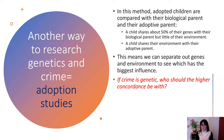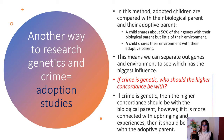This means we can separate out genes and environment to see which has the biggest influence on criminal behaviour. If crime is genetic, the higher concordance should be with the biological parent. However, if it is more connected with upbringing and experiences, it would be higher with the adoptive parents. If genetics are responsible, children would still bring those tendencies into an adoptive environment.